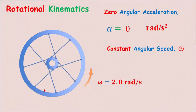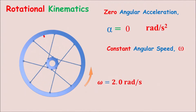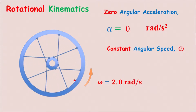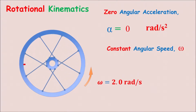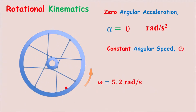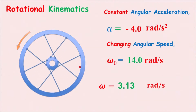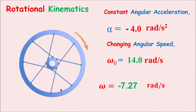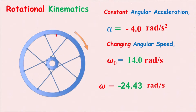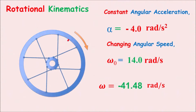Hi everyone, Kamran Nouri here. This video is on rotational kinematics, which talks about rotation of an object around an axis of rotation, like this wheel that is rotating around its symmetry axis passing through its center. The rotational speed can be low or high, or rotation can be slowing down or speeding up.